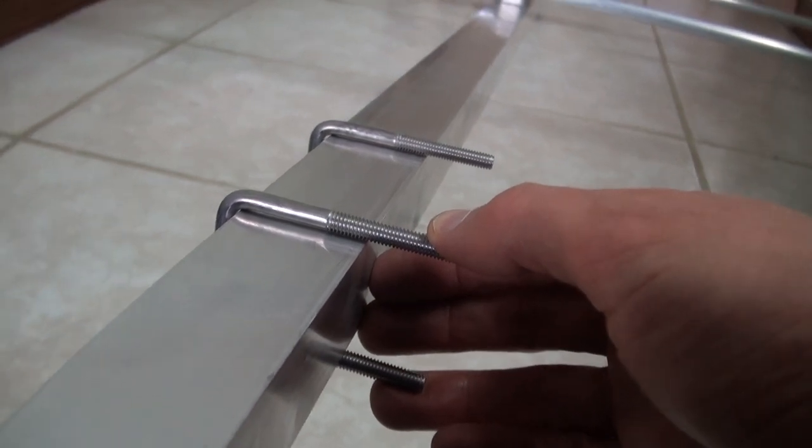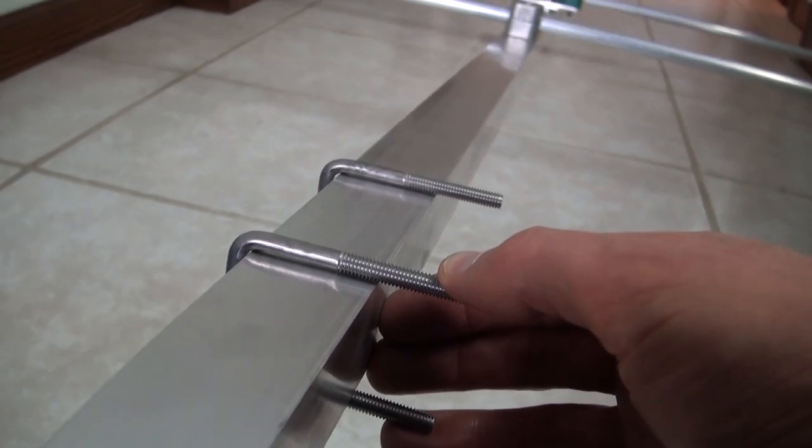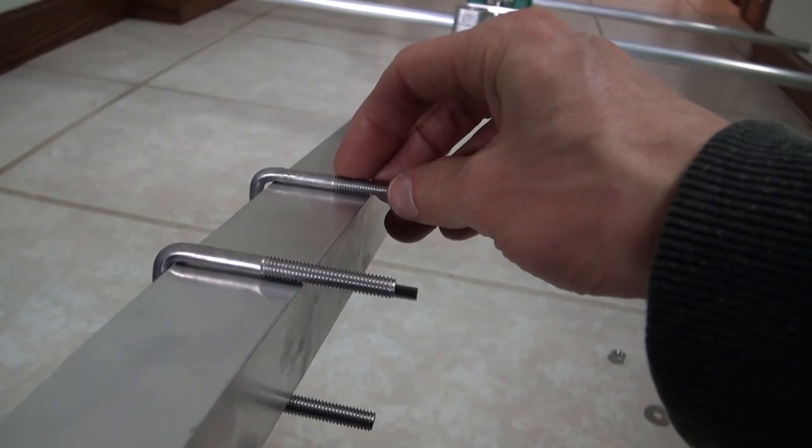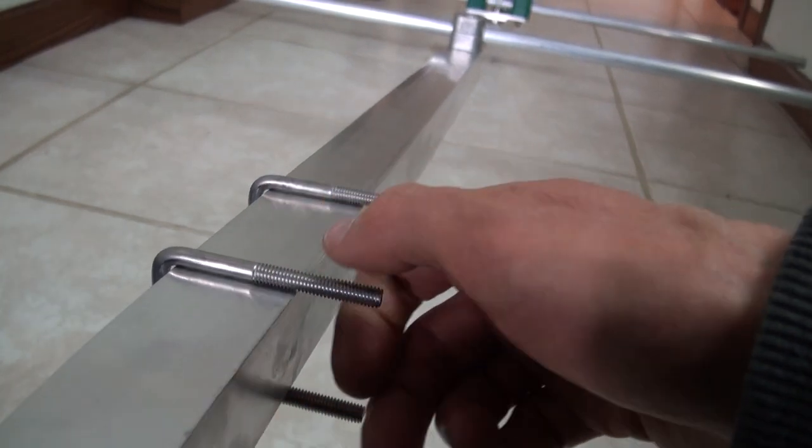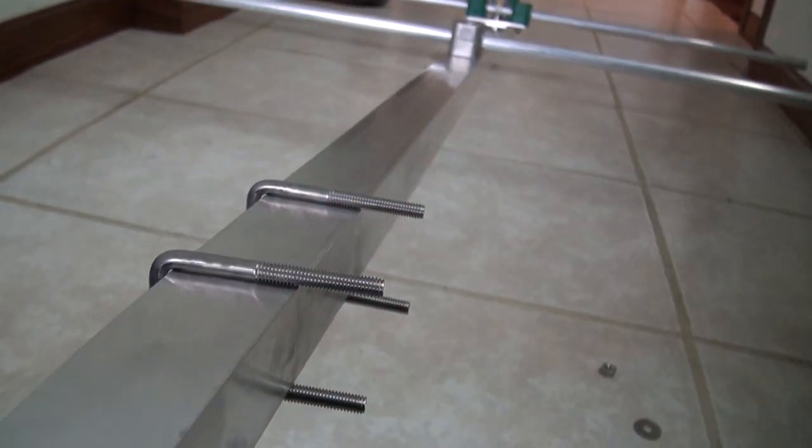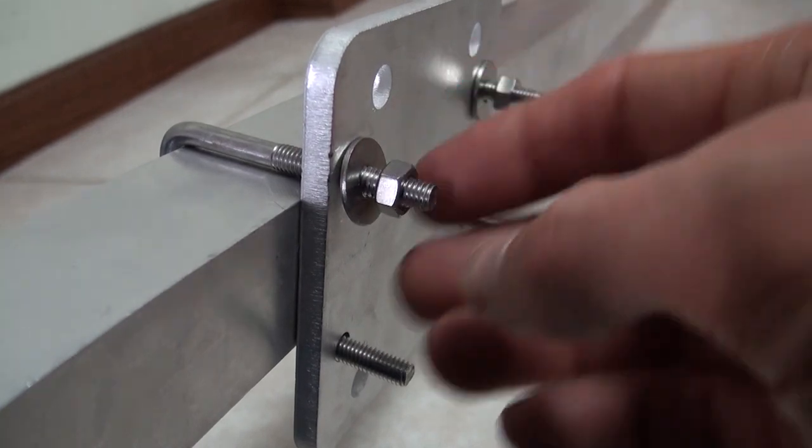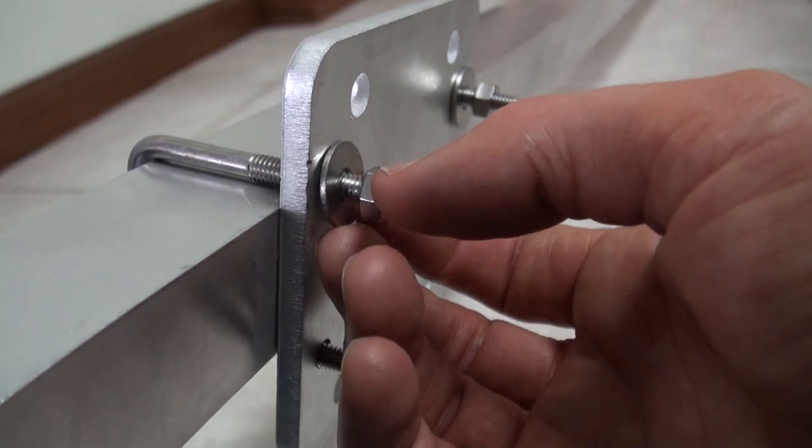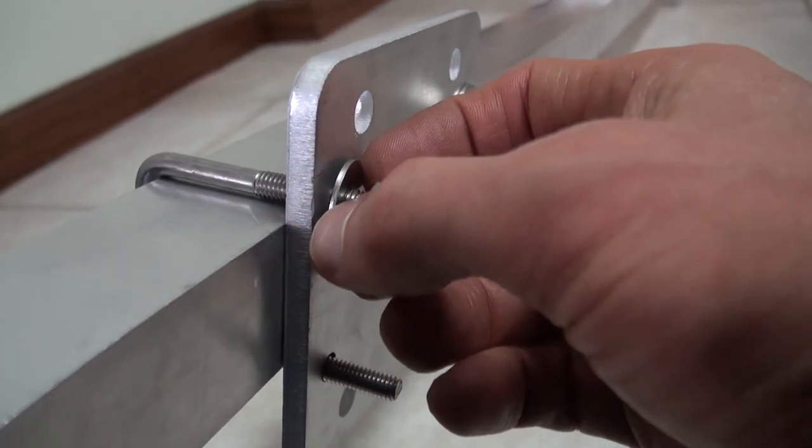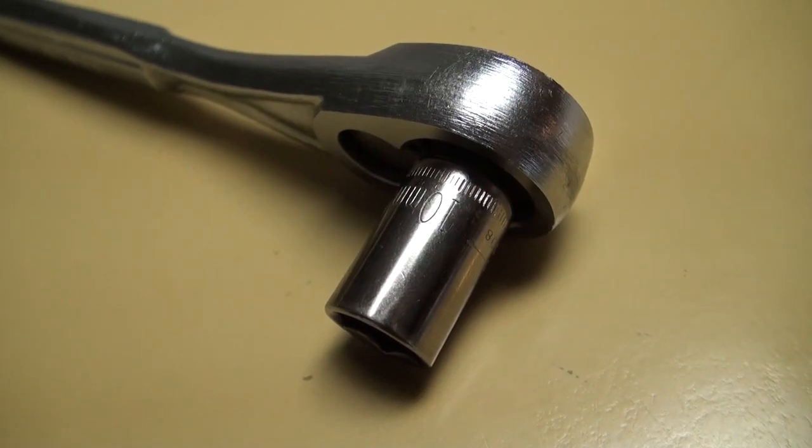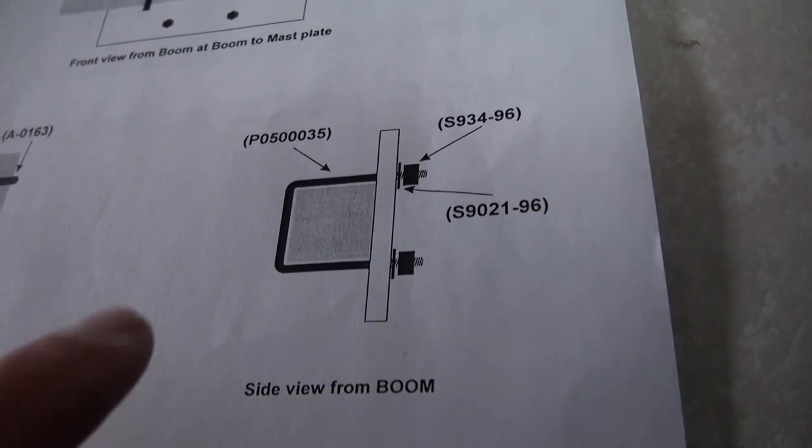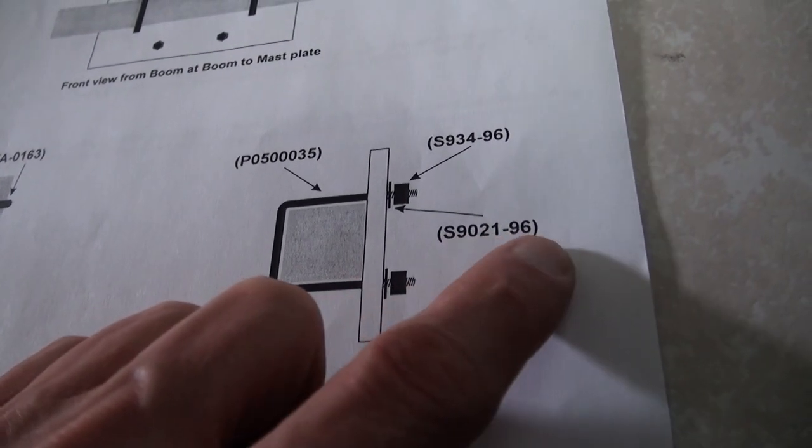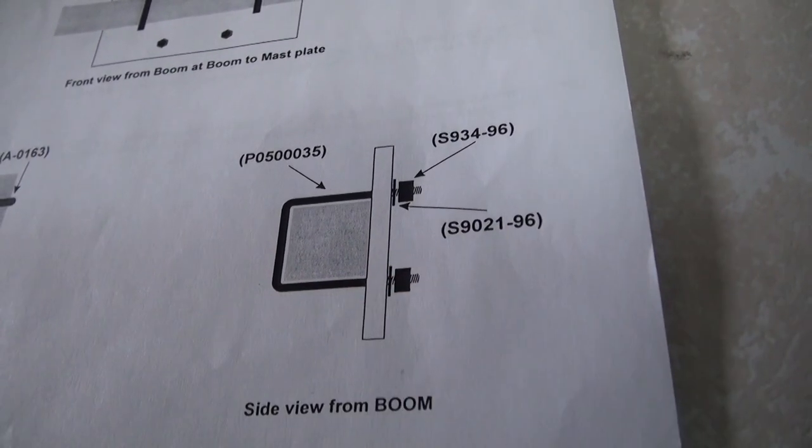Here are the U-bolts, or the square 35 millimeter clamps, part number P05000035. Both of mine were just slightly out of tolerance, and I just pulled them apart by hand a little bit, and then they slid on the boom with no problem. To secure the U-bolts, we'll use 4 of part number S934-98, the nuts, and 4 of part S127-98 washers. Those get secured with a 10 millimeter socket. Please note there appears to be a typo here on the part number for the washer. They've got it as S9021-96, but I believe that is incorrect.